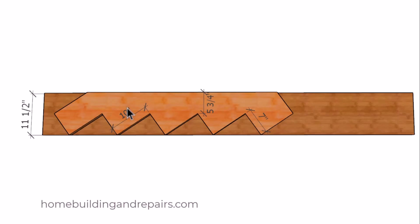In this video I just want to provide you with a few examples of different tread sizes and riser sizes and how they affect the structural strength of the stringer. That would be this number here. As you can see here we have a 10 inch tread, 7 inch riser with a 5 and 3 quarter inch measurement from here to here out of a piece of 2 by 12 lumber.